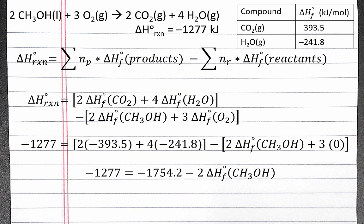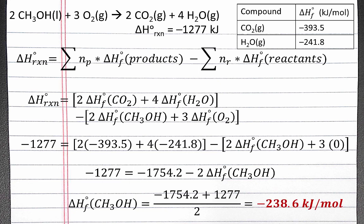Now we can solve for the standard enthalpy of formation for methanol using algebra. When we rearrange and put the numbers into our calculator, we should get −238.6 kilojoules per mole. We'll see you next time. Thank you.